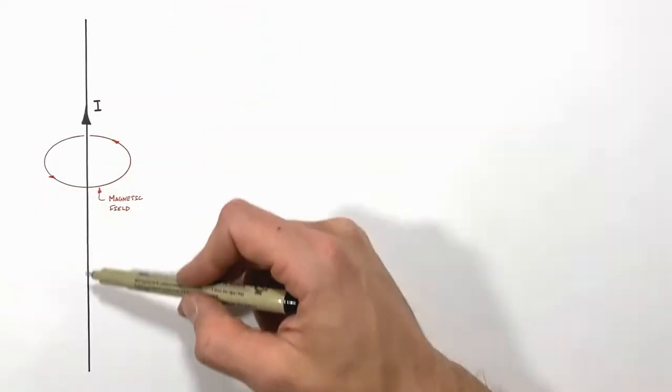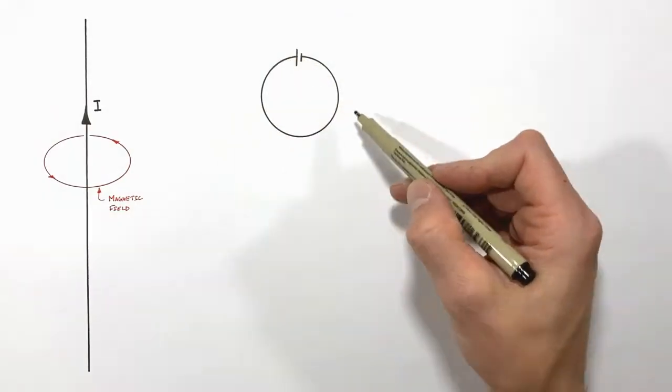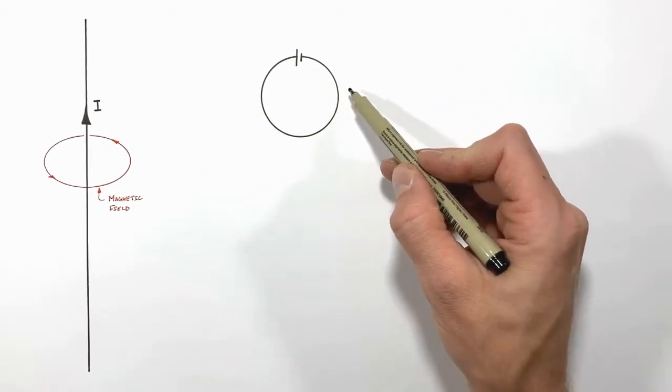To do that, let's take our current-carrying wire and wrap it up in a circle. Imagine we took a loop of wire and hooked it up to a battery, so the current coming out of this wire would move counterclockwise as I've drawn this.